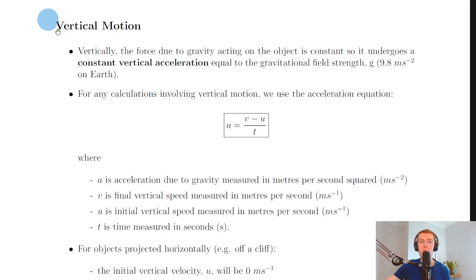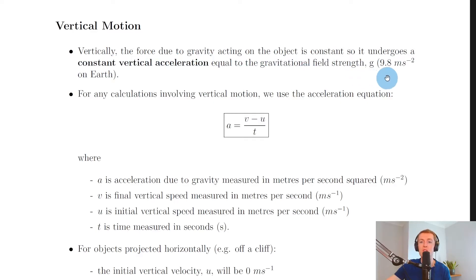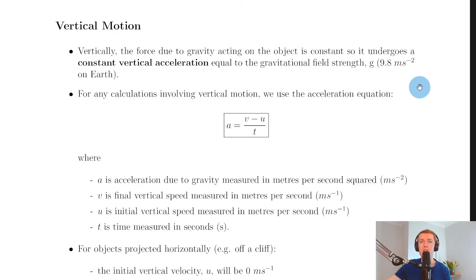Now for vertical motion: vertically, the force due to gravity acting on the object is constant, so it undergoes a constant vertical acceleration equal to the gravitational field strength g. The value for acceleration due to gravity on Earth is 9.8 metres per second squared, equivalent to gravitational field strength g, which is also 9.8 — just with different units, 9.8 newtons per kilogram.